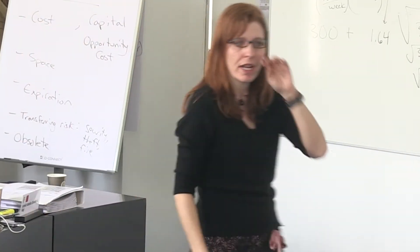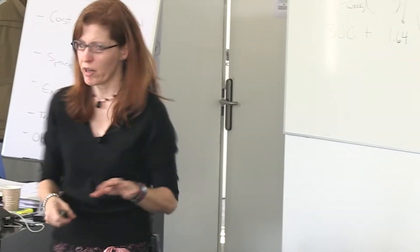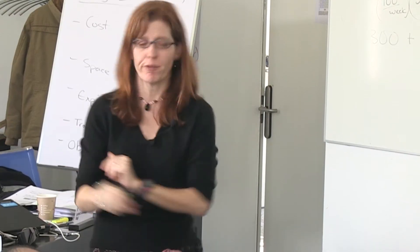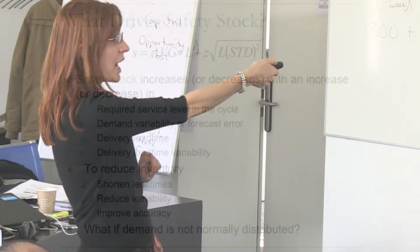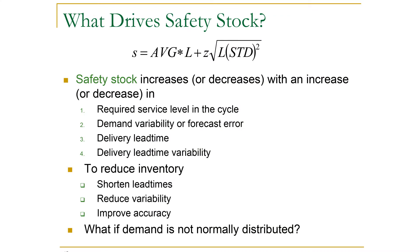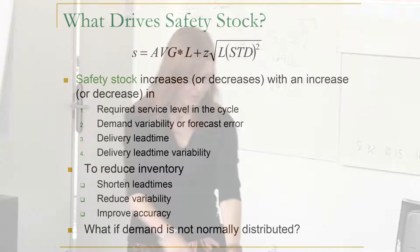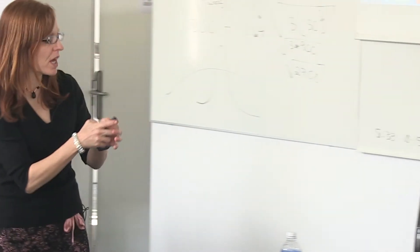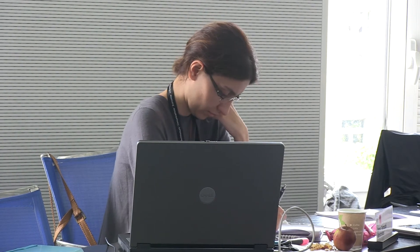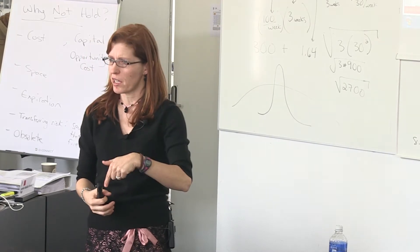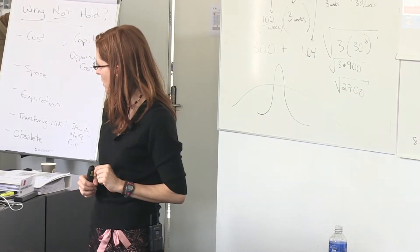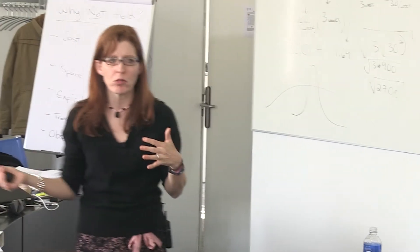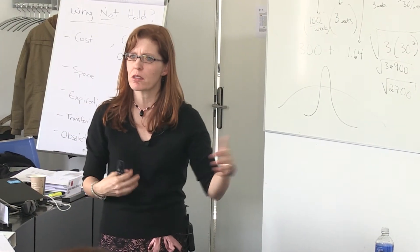If I want to hold less inventory and reduce those costs so I can use that money to meet other needs of the beneficiaries, I should work on shortening lead times when I can, reducing variability, or improving information accuracy.